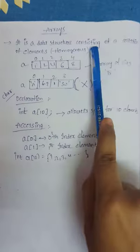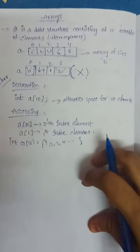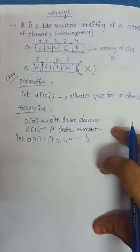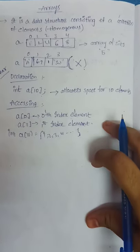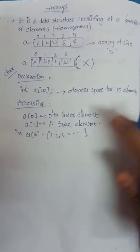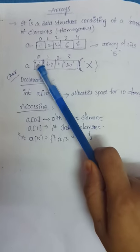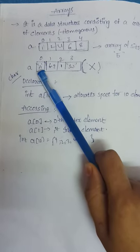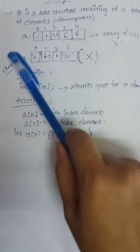An array is a data structure consisting of a collection of elements. An array can hold data, specifically homogeneous data. Homogeneous means it can store only data of one type, like integer. It cannot store heterogeneous data. Here is an example of heterogeneous data: storing a character, float, integer, and string together. An array cannot hold this type of data.